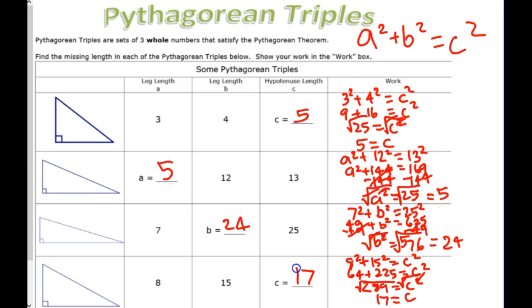5, 12, 13. What's the other one? 7, 24, 25. And?